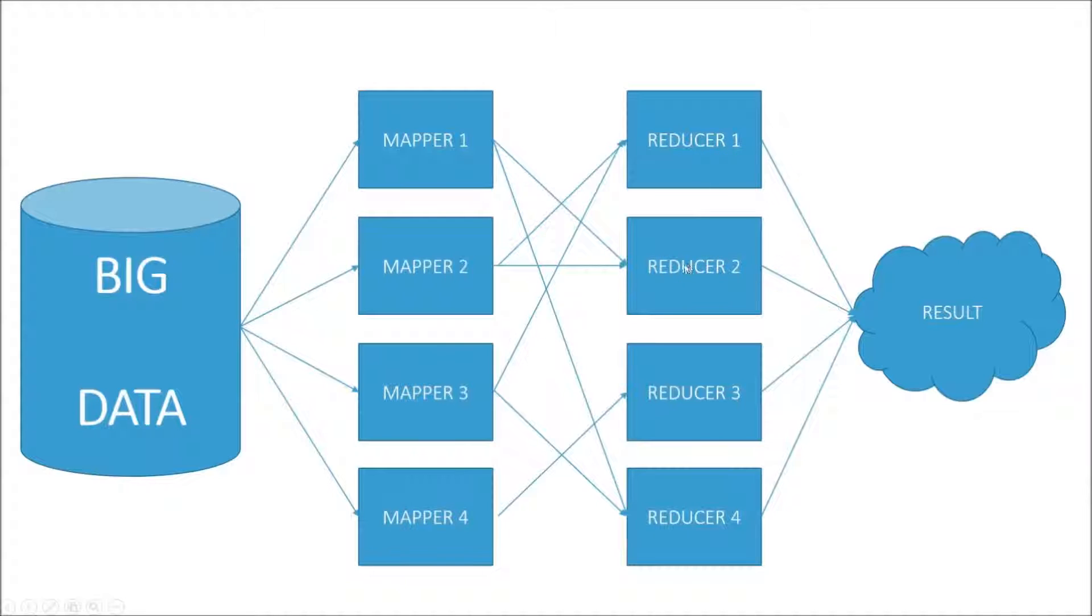But the reducer will always receive all of the movies watched for a given user. So each reducer will be responsible for processing some set of users and all the movies that those users watched. And finally, as the reducers output their output for a given set of users, those all get output to a final result. Again, stored in HDFS or in the cloud somewhere where you can get at it later, where it might be then piped back to your system.